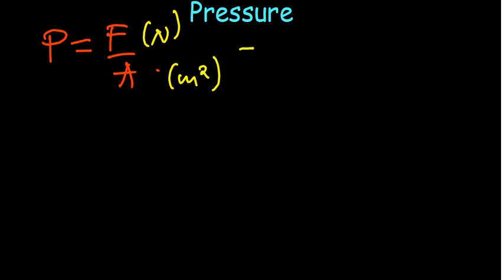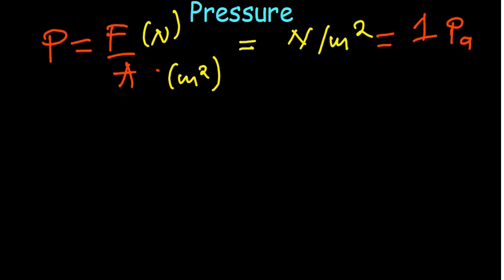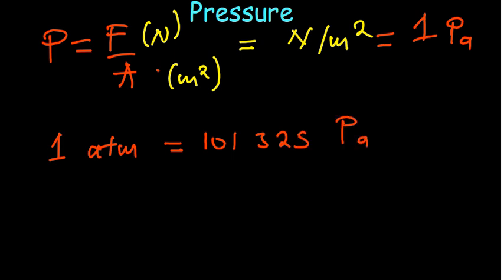So newton per meter squared is one unit we can use for pressure, and this is actually equivalent to one pascal. Other units of pressure that are very useful: one atmosphere (atm) is equal to 101,325 pascals. This is a very important value you have to know, because in most cases we require conversion from atm to pascals.